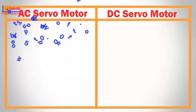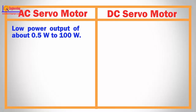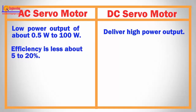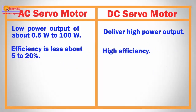AC servo motors deliver low power output of about 0.5 W to 100 W. On the other hand, DC servo motors deliver high power output. AC servo motor efficiency is less — about 5 to 20 percent — while DC servo motors have high efficiency.